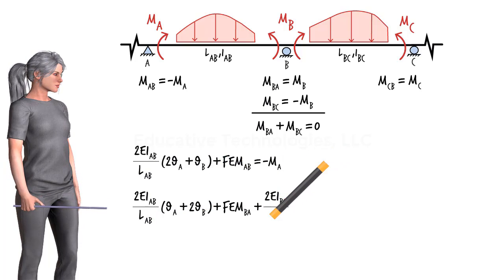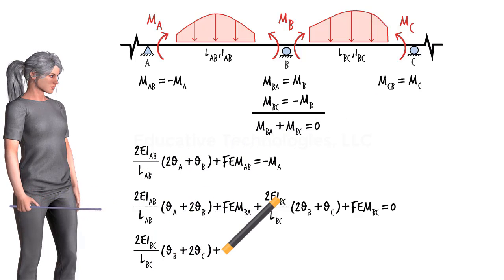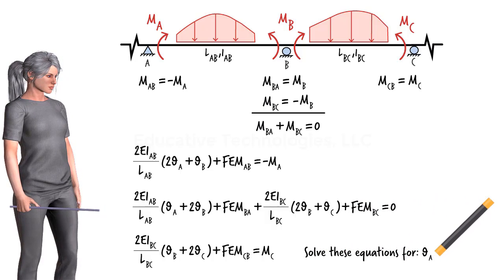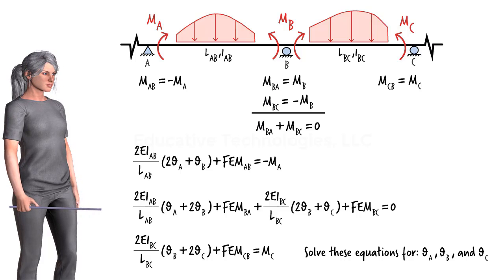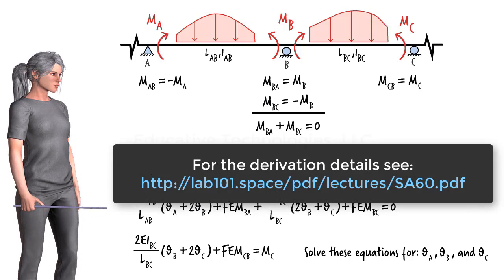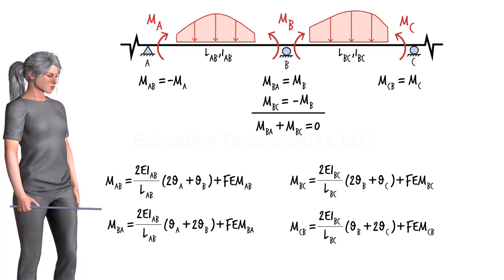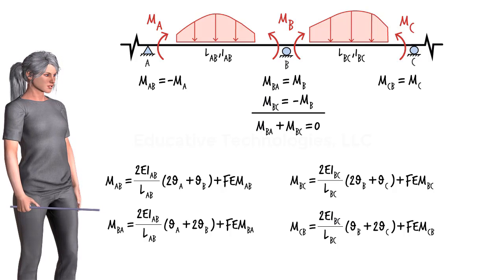The equation is further simplified, and for the third equation we get the result shown. Solving these equations for the unknown rotations, we can determine thetaA, thetaB, and thetaC in terms of the other parameters. Since we are not interested in the slopes in this formulation, I'm not going to write them down here, but you can find them in the accompanying PDF file. Once the joint rotations are determined, we can substitute them back into the slope-deflection equations to have the member-end moments expressed in terms of MA, MC, the fixed-end moments, the segment lengths, and the moments of inertia.